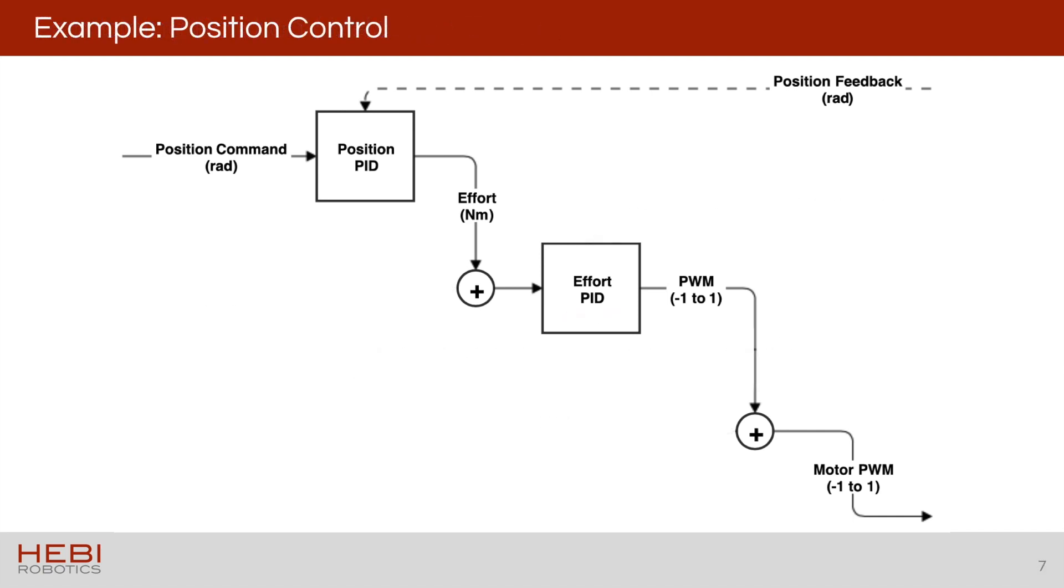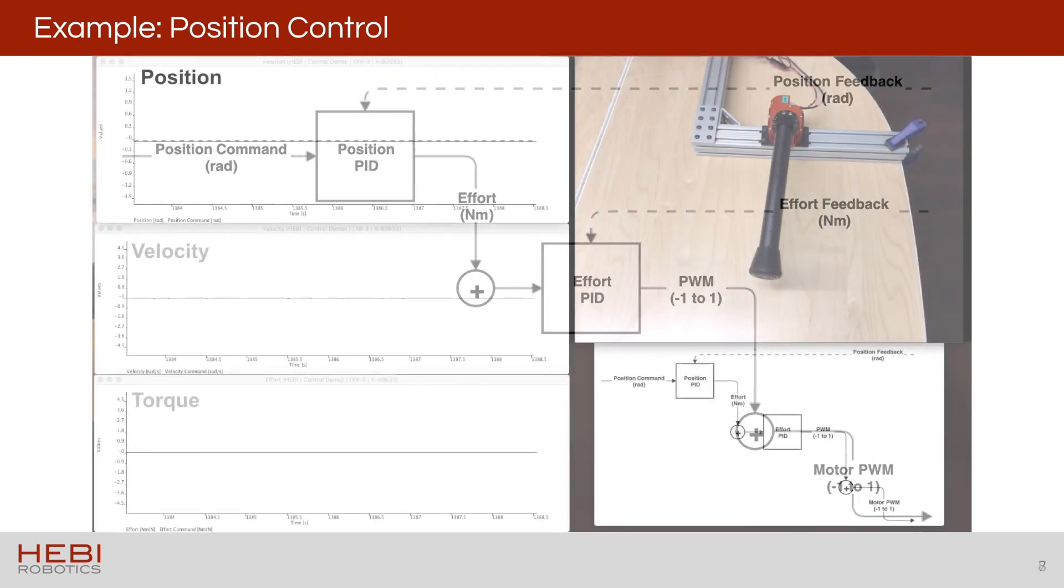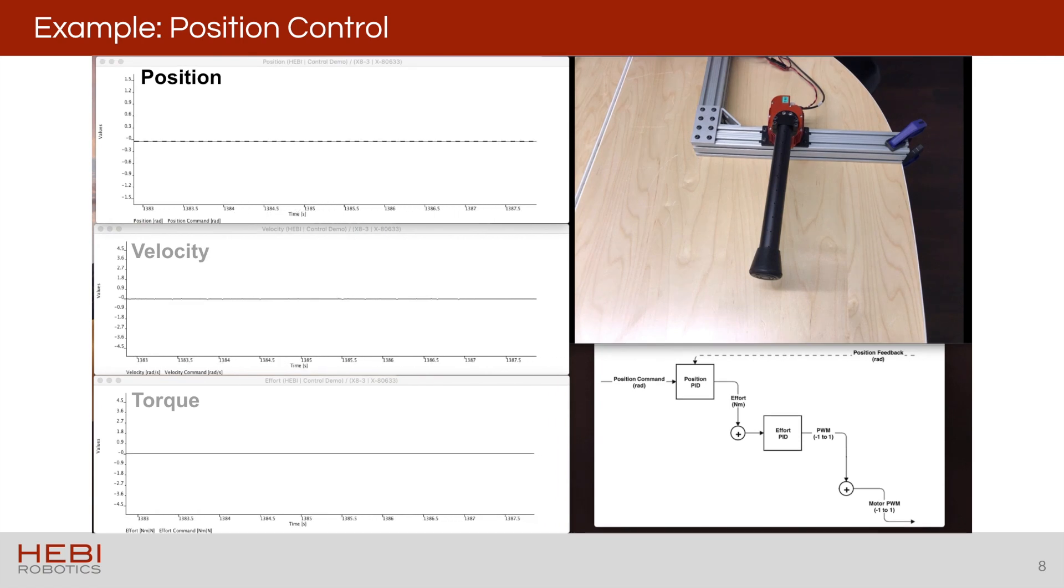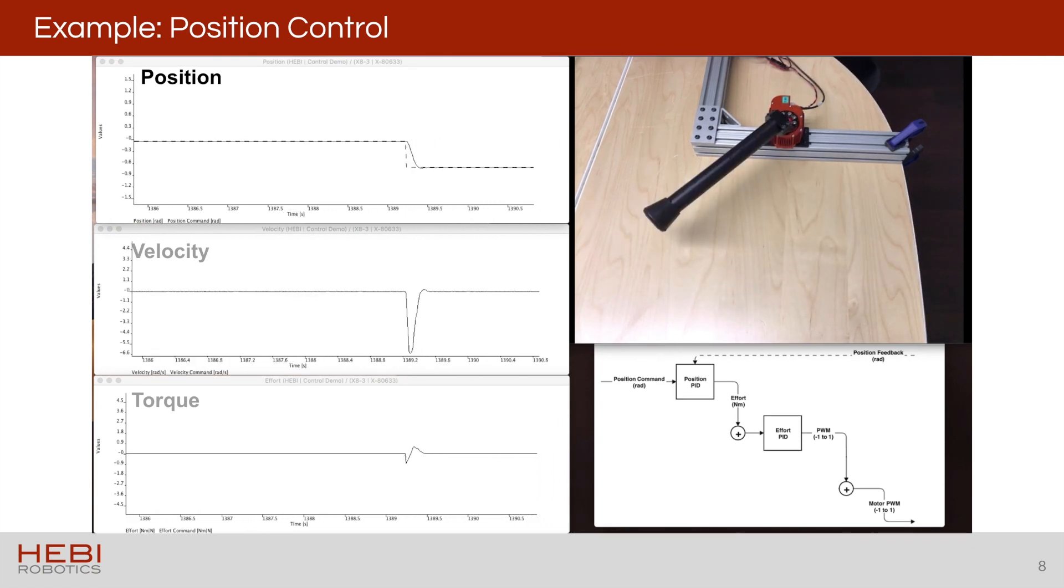So the first example I'm going to go through is just regular position control. On our actuators, it does actually go through the effort loop. You can configure the effort loop or the torque loop so that it isn't using feedback. In that case, it's purely feed-forward. It's essentially acting as a unit conversion so that you can have your position gains be somewhat more intuitive. You can know that they're roughly a spring constant in Newton meters per radian. Because we're series elastic actuators, though, you can actually incorporate effort feedback. And that makes the actuator actively compliant on the output and allows it to behave very closely to a virtual spring.